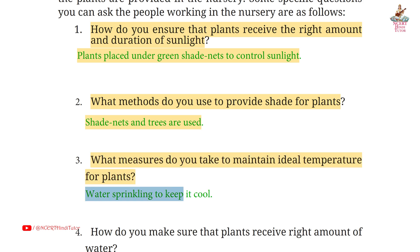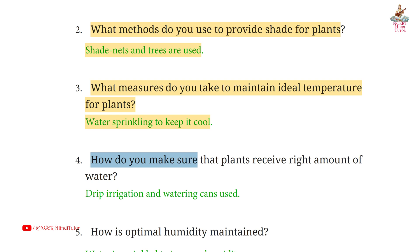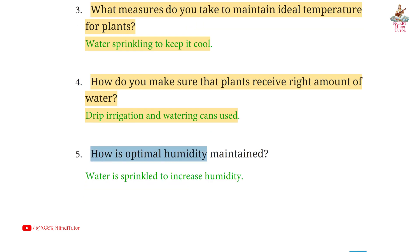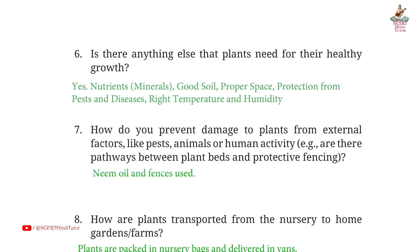Third: what measures do you take to maintain ideal temperature for plants? Answer: water sprinkling to keep it cool. Fourth: how do you make sure that plants receive the right amount of water? Answer: drip irrigation and watering cans used. Fifth: how is optimal humidity maintained? Answer: water sprinkled to increase humidity.